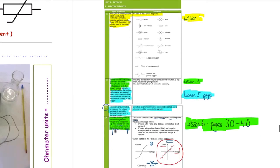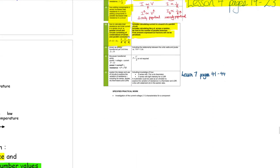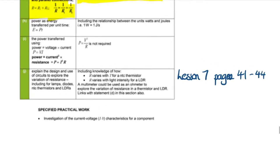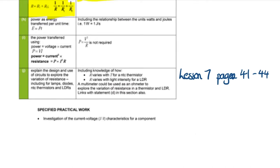Let's see where that fits in with the specification. We've almost completed this booklet with two lessons left including today's. Part G of the specification, lesson 7, pages 41 to 44. Today's learning objective is to explain the design and use of circuits to explore the variation of resistance, including lamps, diodes, NTC thermistors, and LDRs.